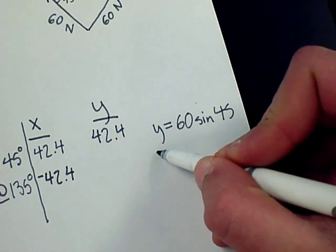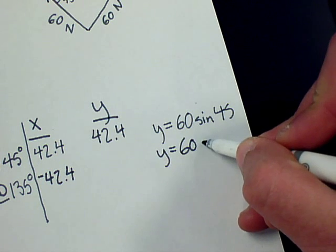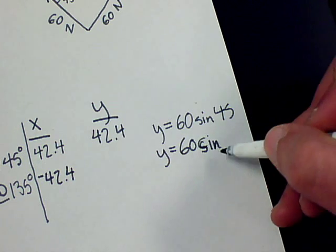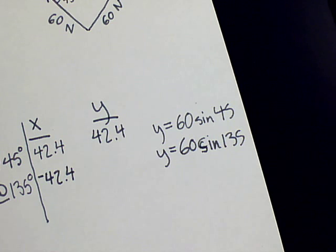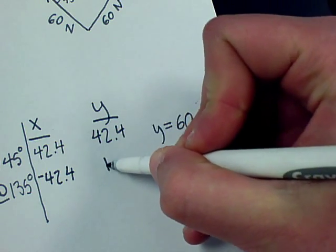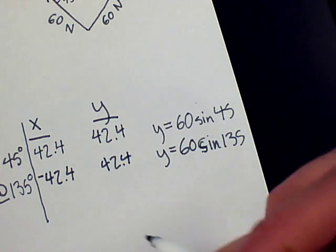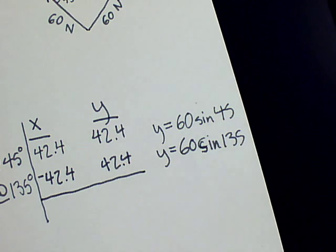And then for the y, you have 60 times the cosine, or the sine. Yes, 60 times the sine of 135. And that is equal to 42.4, once again.